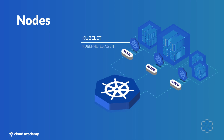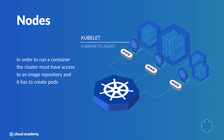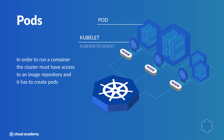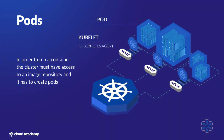A Kubernetes cluster with just nodes is not really doing anything useful. In order to run a container, the cluster must have access to an image repository, and it has to create pods. A pod is a basic workload unit in Kubernetes. Often, a pod is an instance of a single container, however it can be comprised of multiple containers. A pod will also have a unique IP address within the network, as well as storage resources based on its config. This is the smallest unit of what we might think of as a microservice in a software-as-a-service architecture. For example, you might have a simple stateless Python app run as a pod in your Kubernetes cluster.